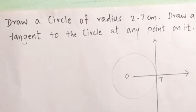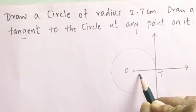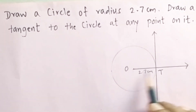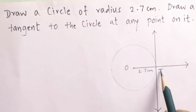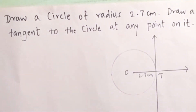Second example: draw a circle of radius 2.7 centimeters and draw the tangent to the circle at any point on it. Here is the rough figure — a circle of radius 2.7 centimeters with center O and point of contact T. We have to draw the tangent passing through T.